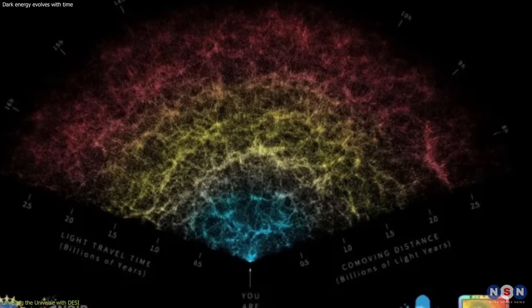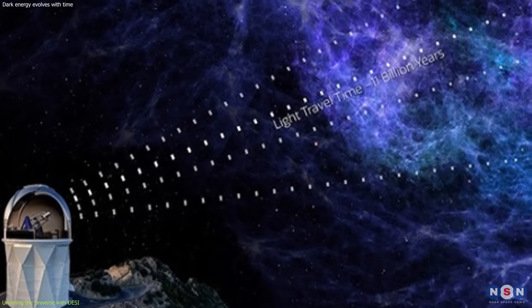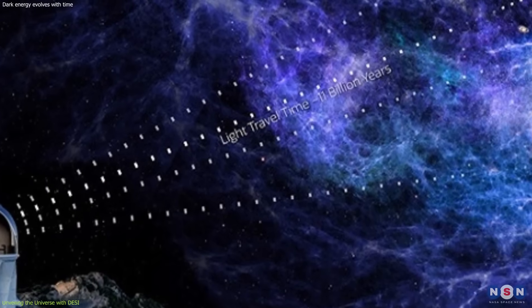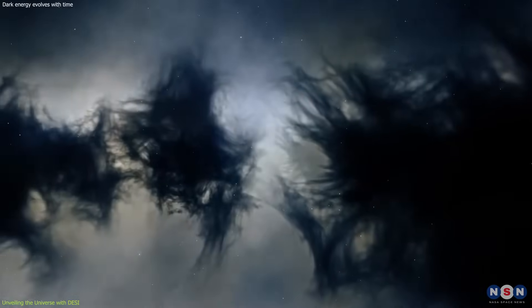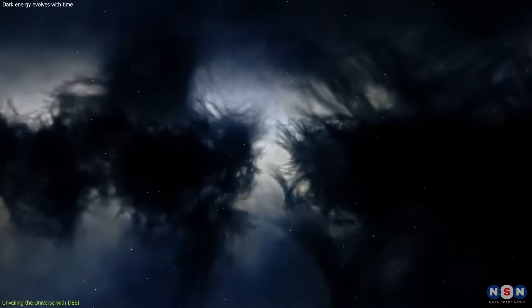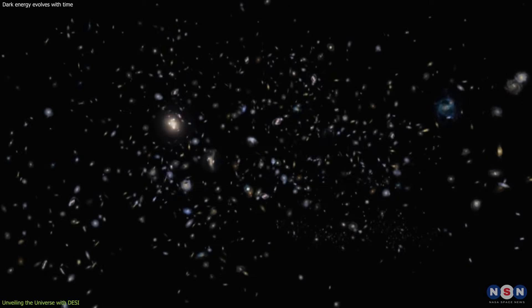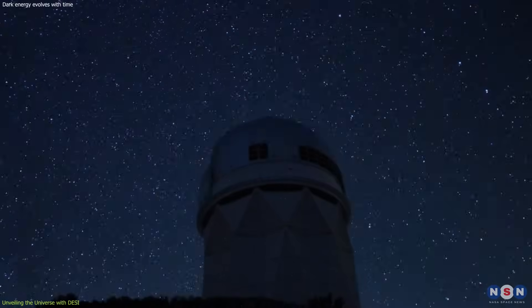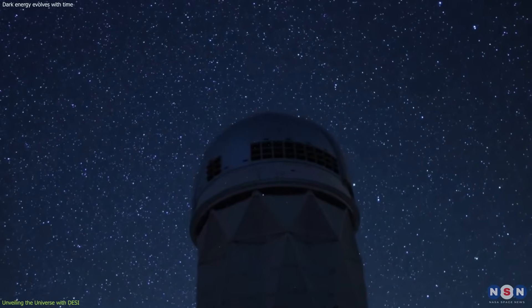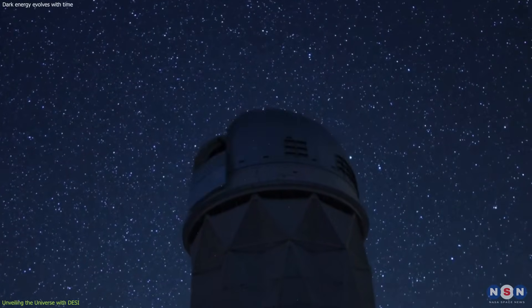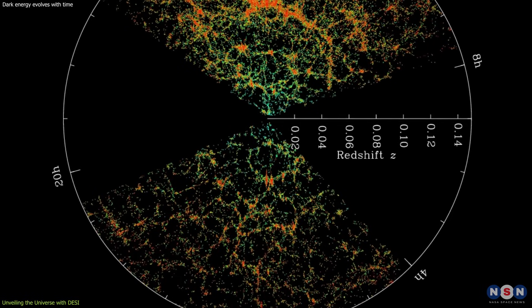One of the key features of DESI's map is its high precision in measuring the universe's expansion rate. This precision is crucial for studying the influence of dark energy on the structure and growth of the universe. Its observations are so powerful that they are twice as effective as those of its predecessor, the Sloan Digital Sky Survey, in measuring the early universe's expansion history.